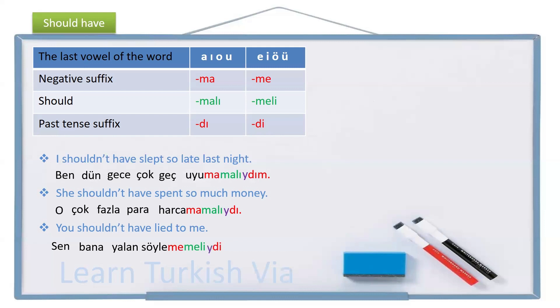With the buffer letter. And the person pronoun suffix, söylememeliydin, you shouldn't have lied, söylememeliydin, you shouldn't have lied to me, sen bana, yalan söylememeliydin.